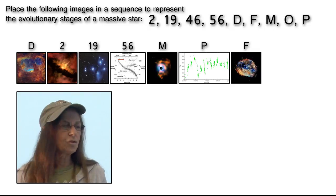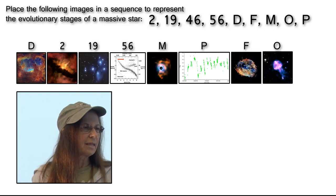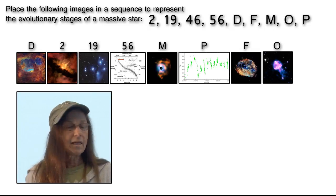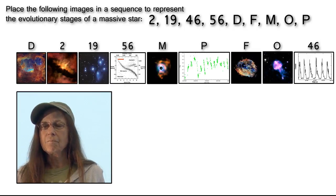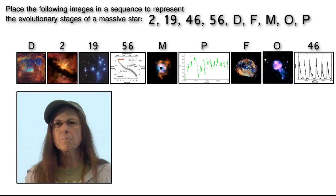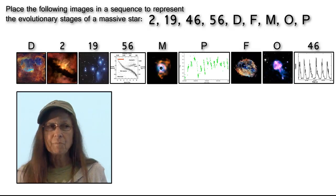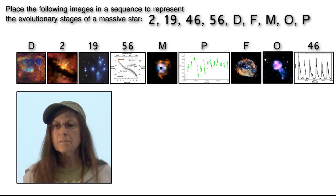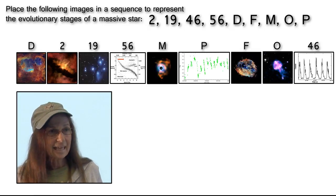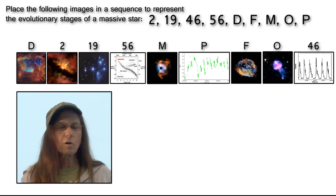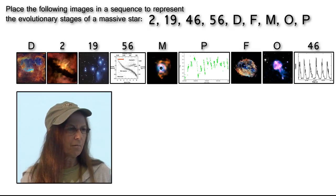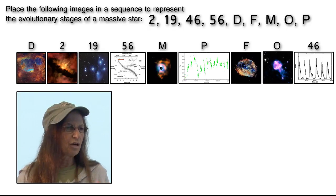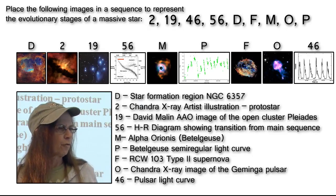This is a type 2 supernova event, and again we have a pulsar, along with a light curve produced by that pulsar. It looks very different from the other light curves — this one is counts per second, because pulsars are millisecond pulsars rotating really, really rapidly, so it is always counts per time with those sharp little peaks.